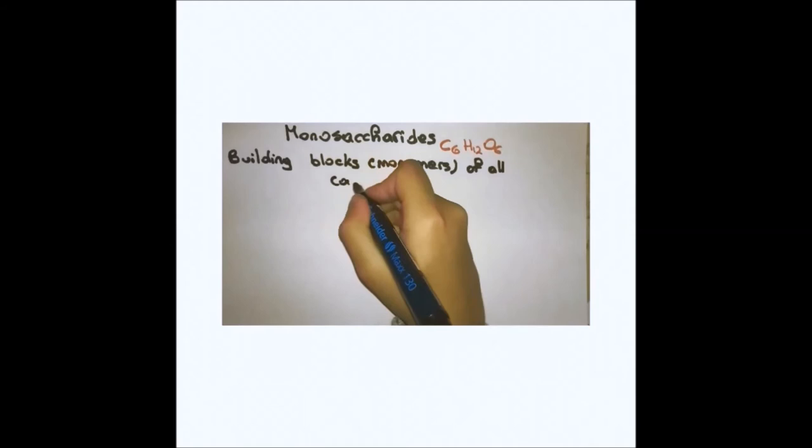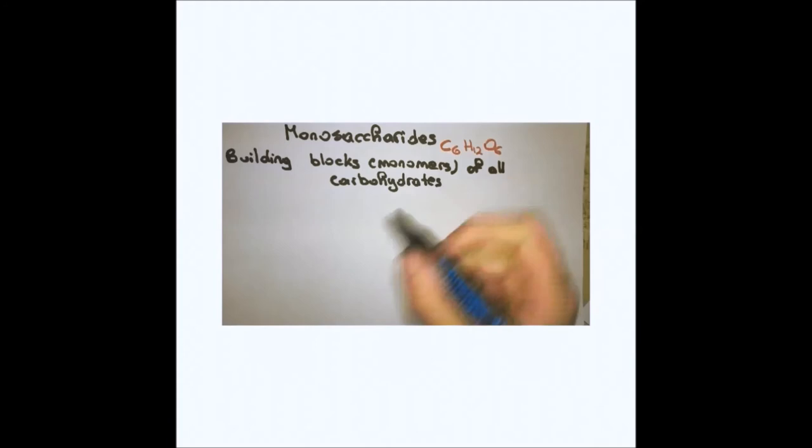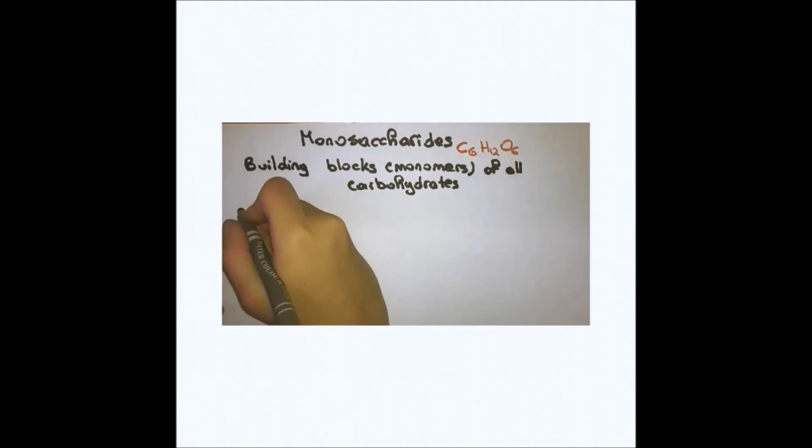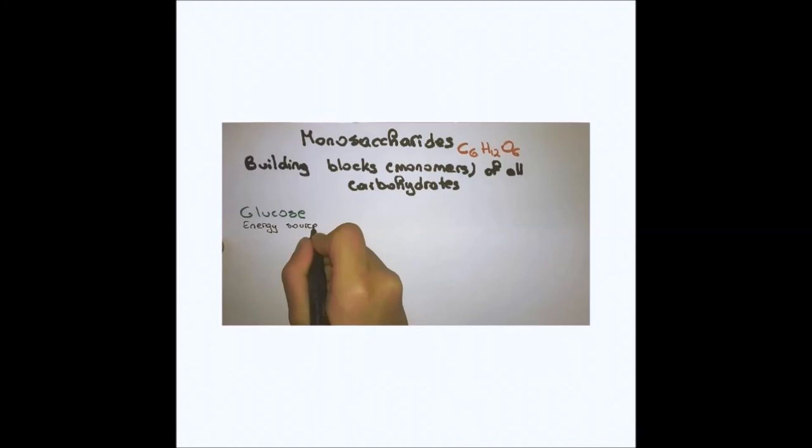Common monosaccharides include glucose. Glucose is by far the most abundant monosaccharide. It is water soluble, easily transported through an organism and is the energy source for cellular respiration and the production of ATP.